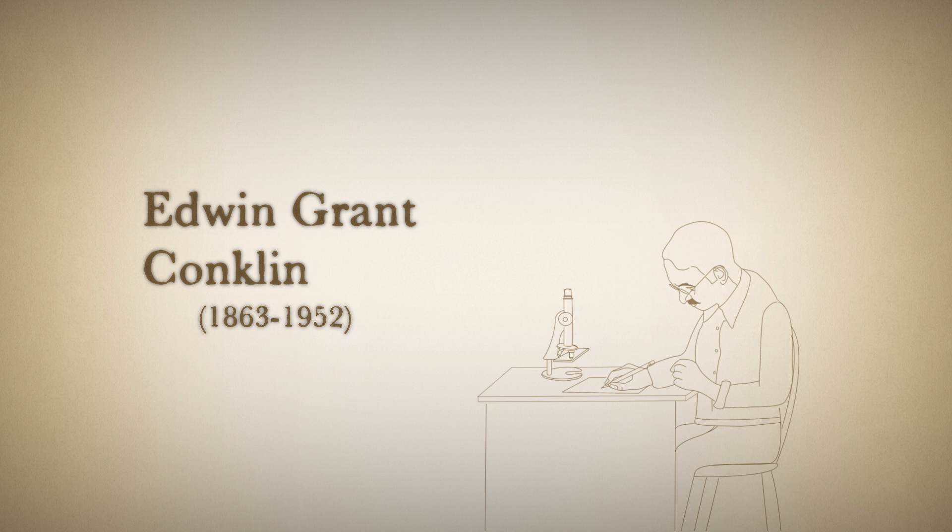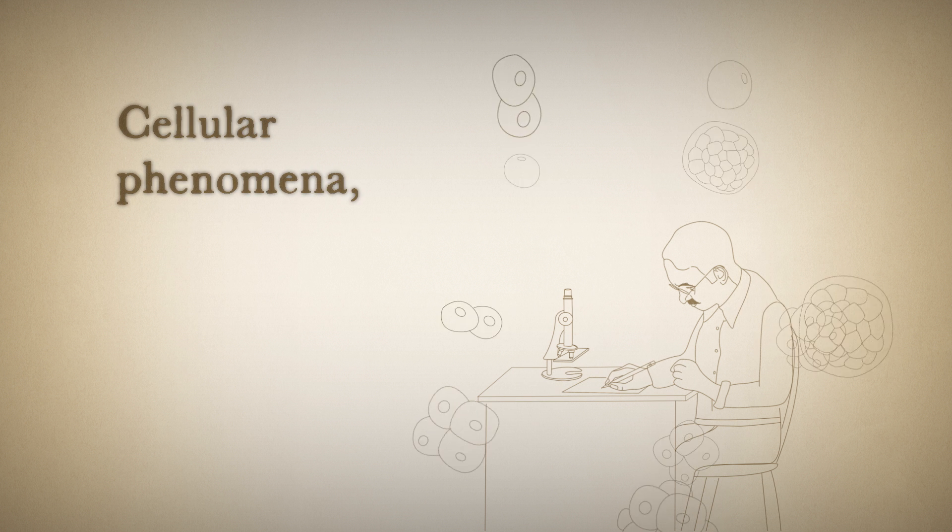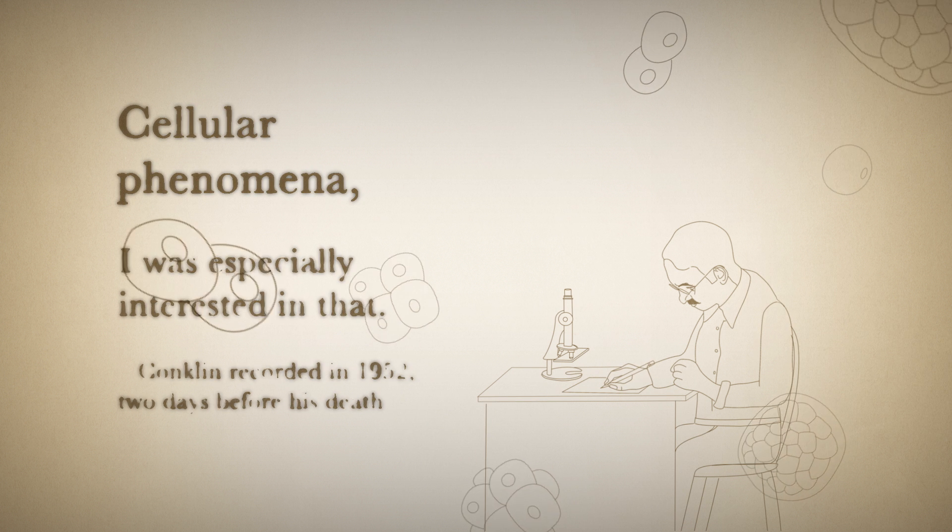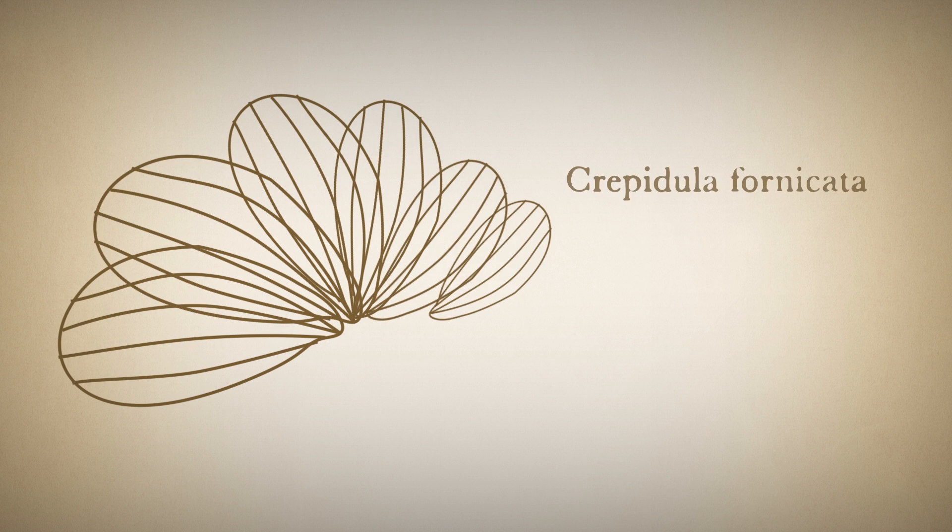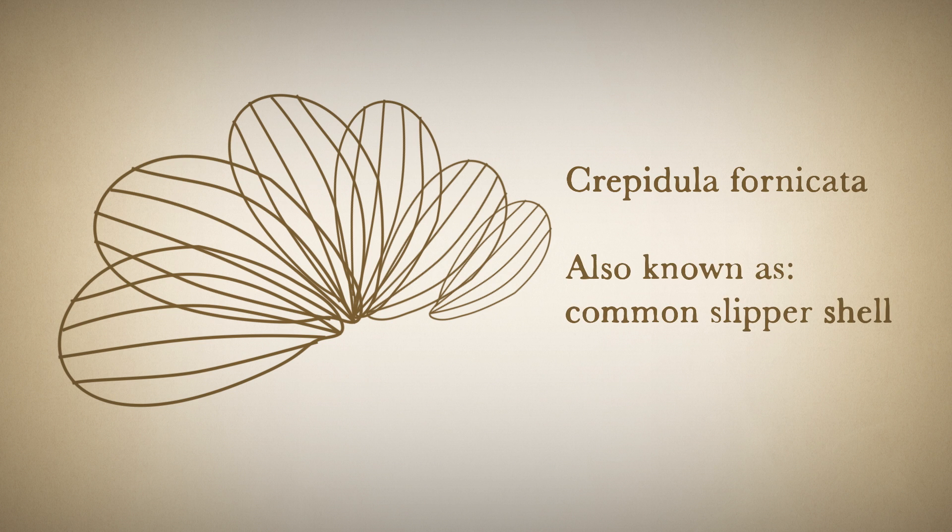One of these scientists was Edwin Grant Conklin. "Cellular phenomena, I was especially interested in that." Conklin studied the embryos of a snail called Crepidula fornicata, which he chose for its relatively large transparent eggs.